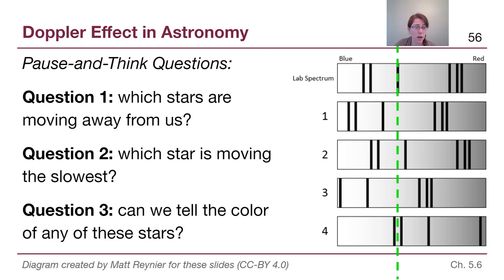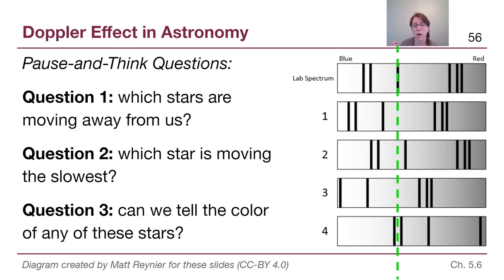Question three asks if we can tell the color of any of these stars. It's really important to recognize that Doppler shift cannot tell us the color. The number of lines on the blue side or red side also tells us nothing about color. In order to know the color of a star, we either need the spectral curve itself or we need to be given the temperature value of the star. So for question three, the answer is no — we cannot tell the color just from the information provided. Doppler shift does not change the overall color; we aren't grouping these into blue stars and red stars.